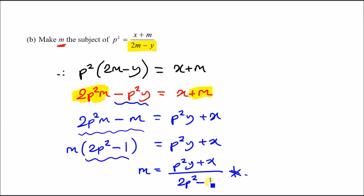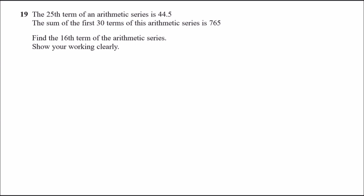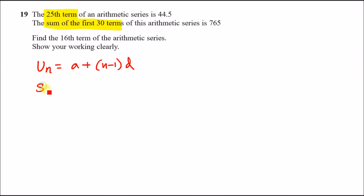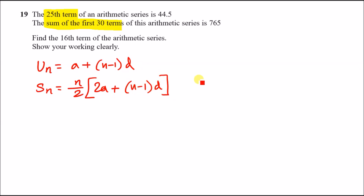Question 19: the 25th term of an arithmetic series is 44.5, and the sum of the first 30 terms is 765. Before reading the actual question, let's write everything related to arithmetic series. The nth term formula is: uₙ = a + (n − 1)d, where a is the first term and d is the common difference. The sum of n terms is: Sₙ = (n/2)[2a + (n − 1)d]. This is given on your formula sheet.